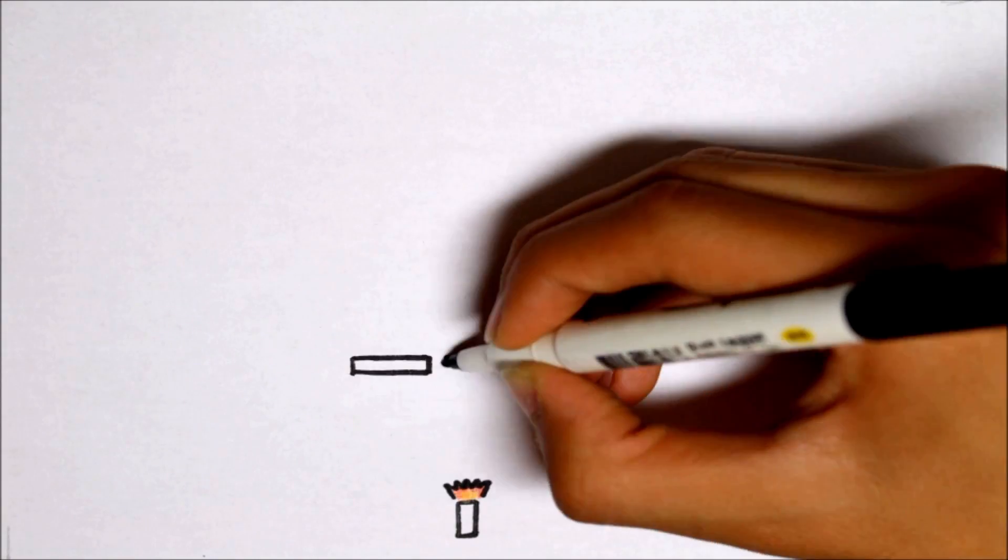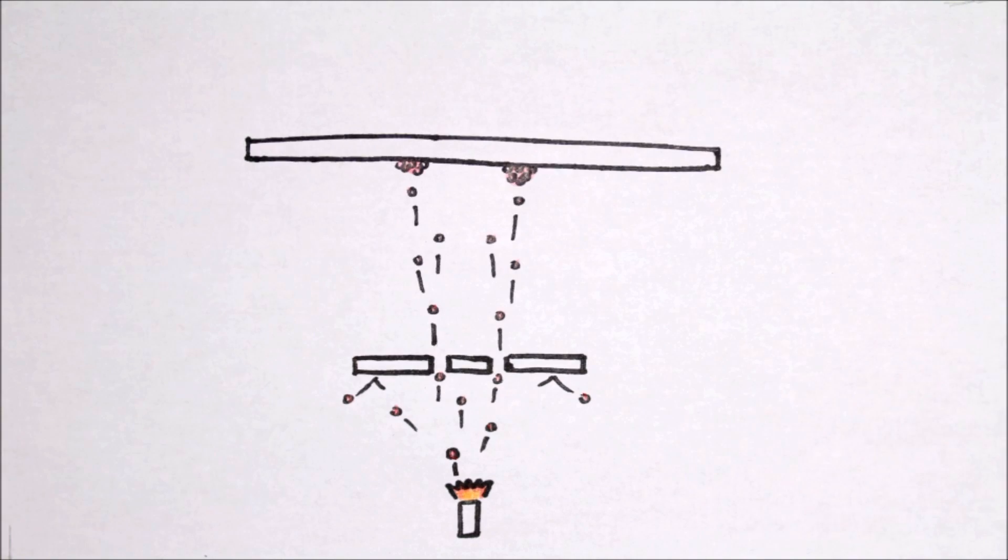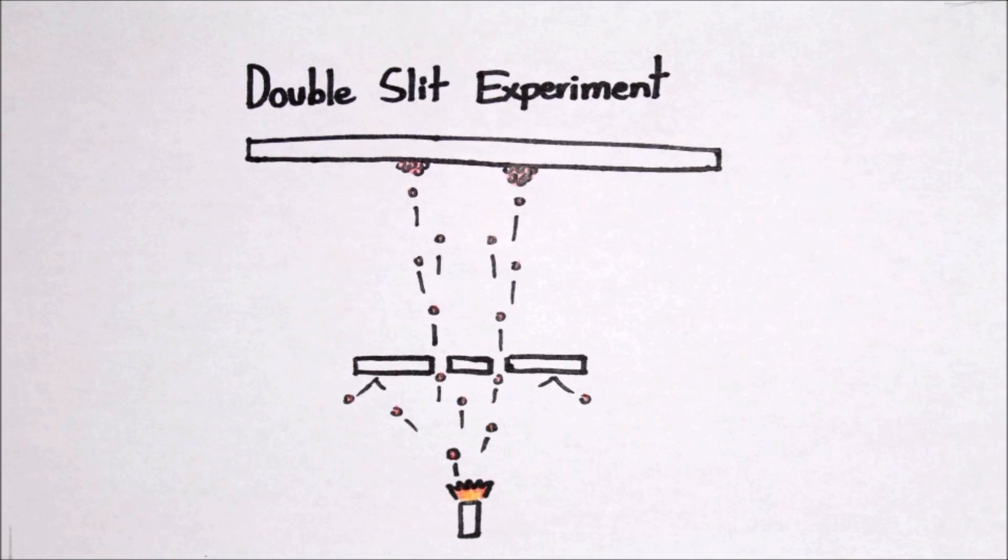In the 20th century, physicists observed the behavior of particles as they went through the double slit experiment, one of the most famous experiments in physics originally performed by Thomas Young.